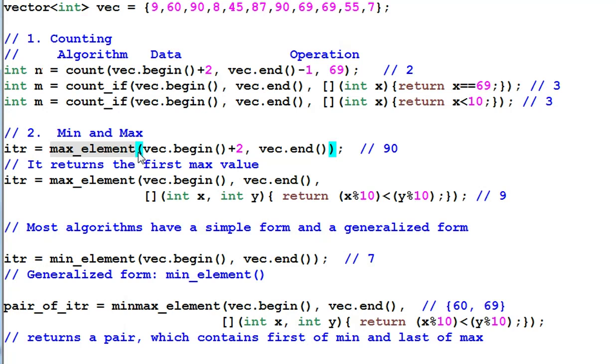Most of the algorithm functions provide two forms. A simplified form that uses certain default comparison function or default computation operation. And a generalized form which allows you to provide your own version of the operation. Sometimes the simplified form and the generalized form has the same function name, like the case of max element. And sometimes they have different name, like the case of count and countif. And during the walkthrough, for the purpose of simplification, sometimes I only mention one form of the algorithm.